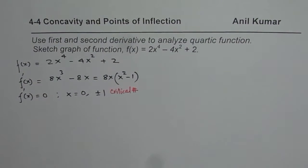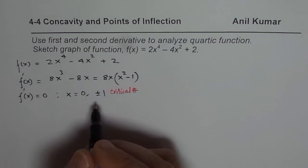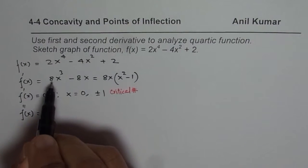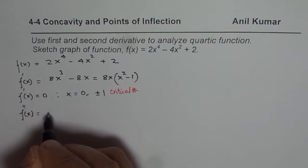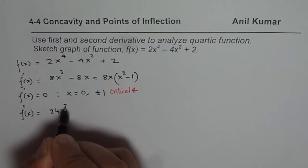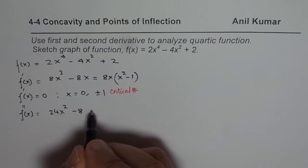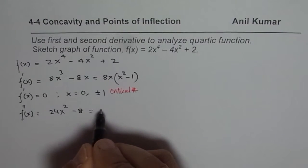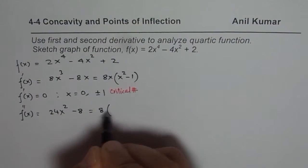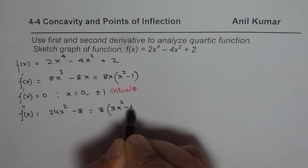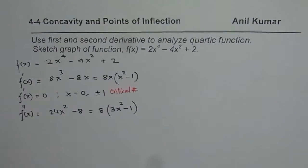Now let us also find the second derivative. The second derivative is 24x² - 8, and we can write this with 8 as a common factor: 8(3x² - 1). So that is the second derivative.